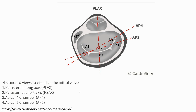There are four standard views to visualize the mitral valve. First is the parasternal long axis. Second is the parasternal short axis. Third is the apical four-chamber (AP4). And fourth is the apical two-chamber (AP2).